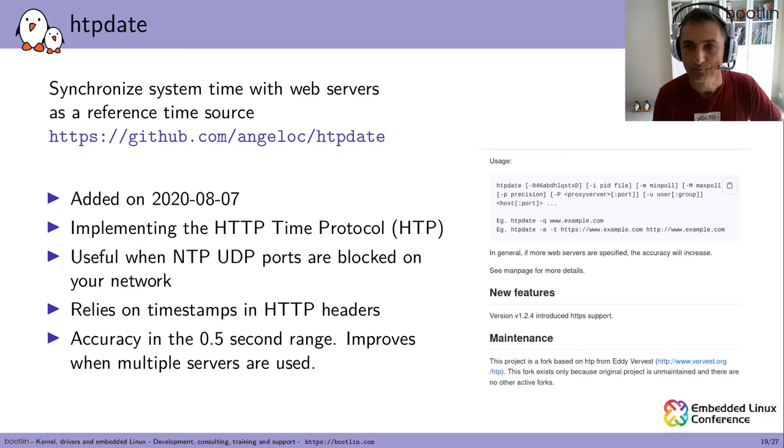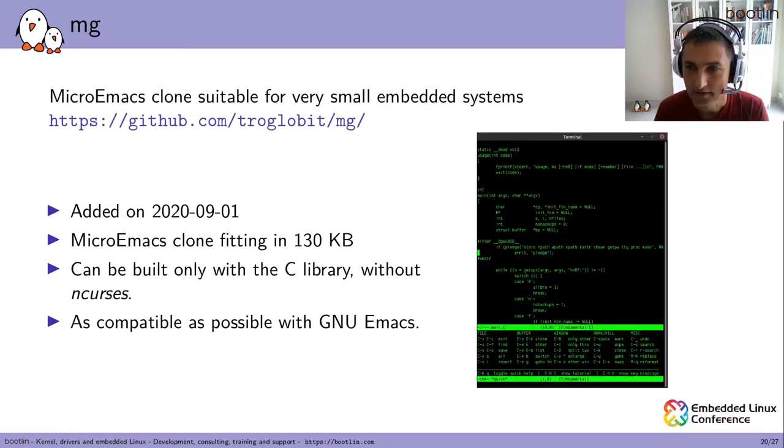The next one is called MG, a micro Emacs clone suitable for very small embedded systems. It fits in 130 kilobytes and can be built only with the C library without ncurses, unlike other alternatives. It tries to be as compatible as possible with GNU Emacs so you can easily switch between the two.